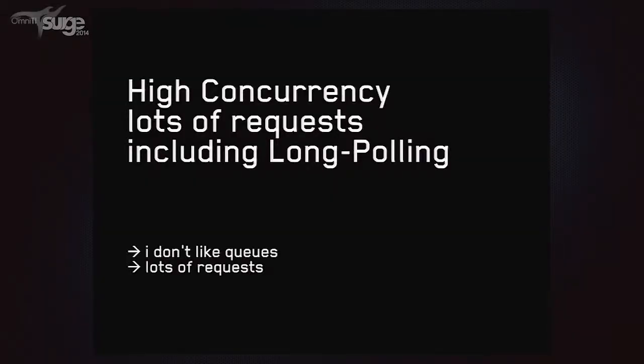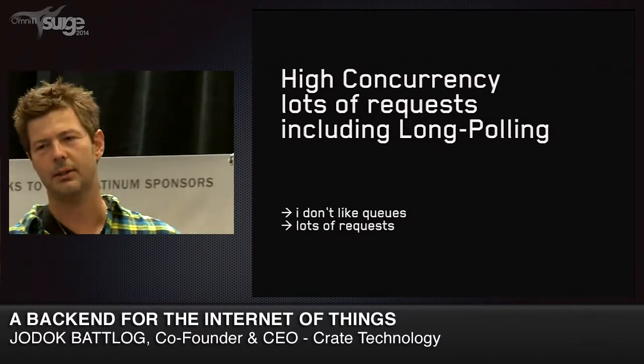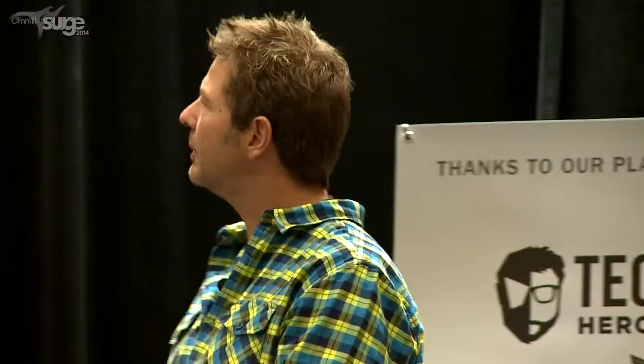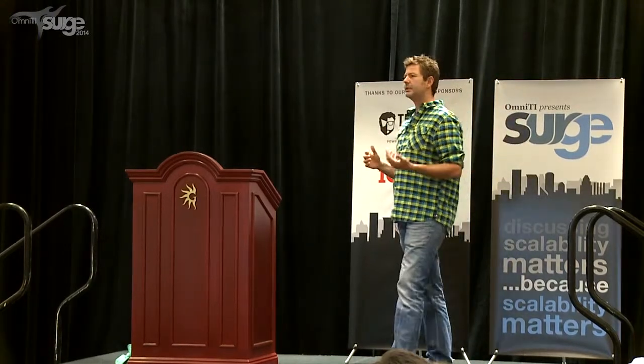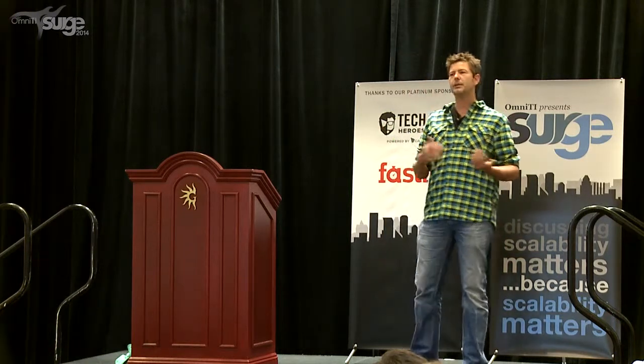What they have in common is high concurrency. The sensors, if they detect something, send a request immediately. We have lots of requests sent all the time — you do not want to queue them, including long polling. One challenge is all these long polling requests, because most of these devices are NATted and you cannot contact them. If you want to control an actor — switch it on or off — you always have a long polling connection to your server, where every user typically has more than one or two sessions.